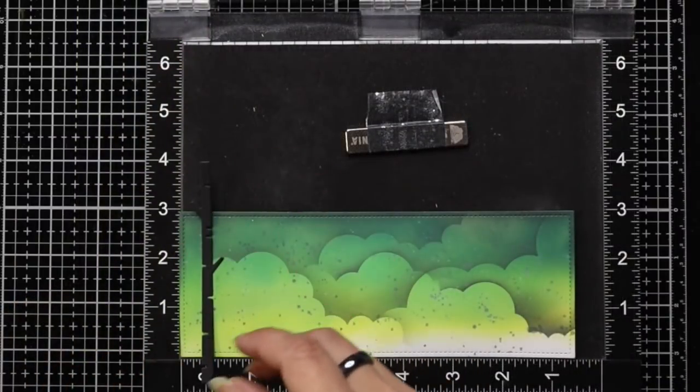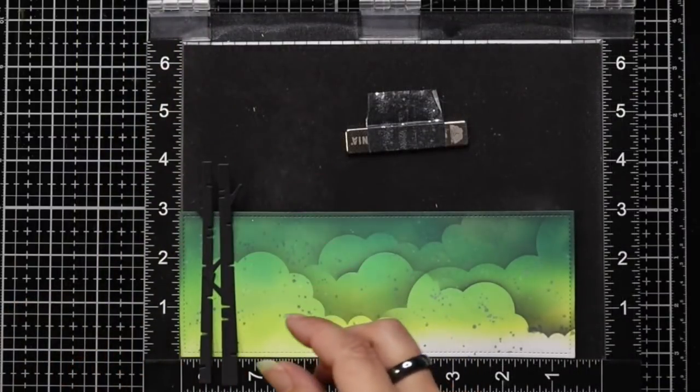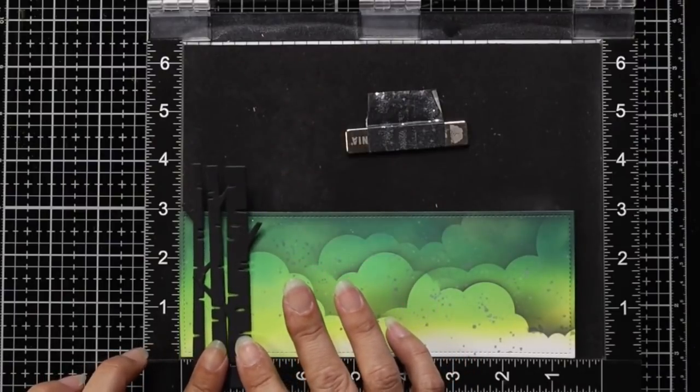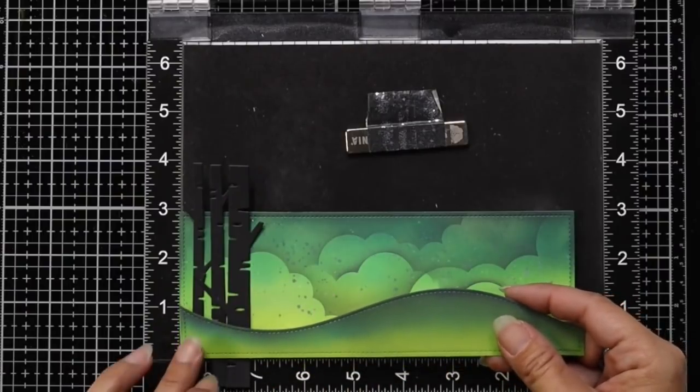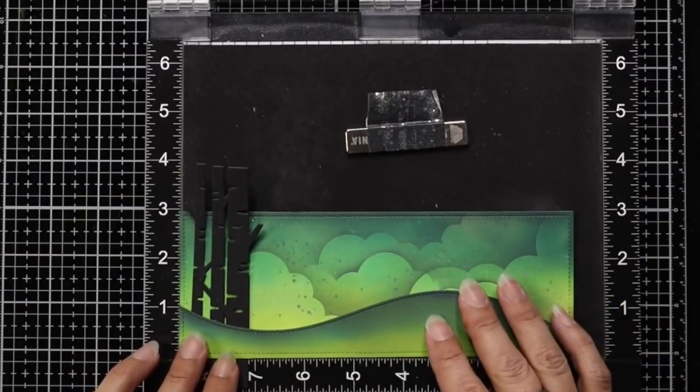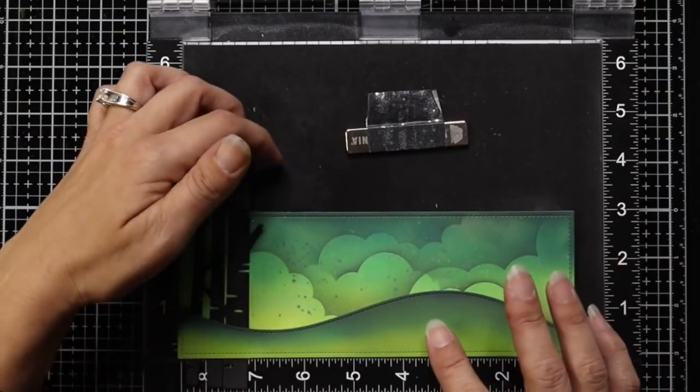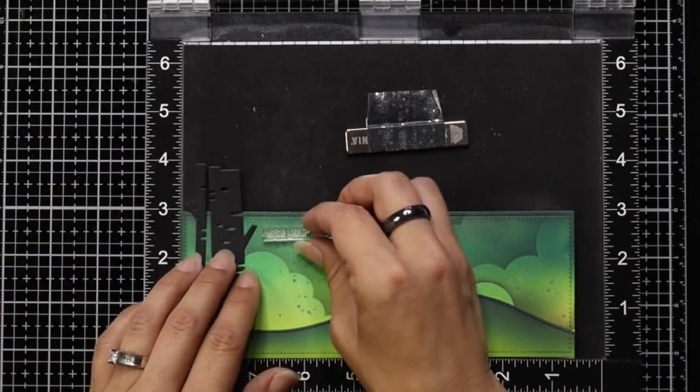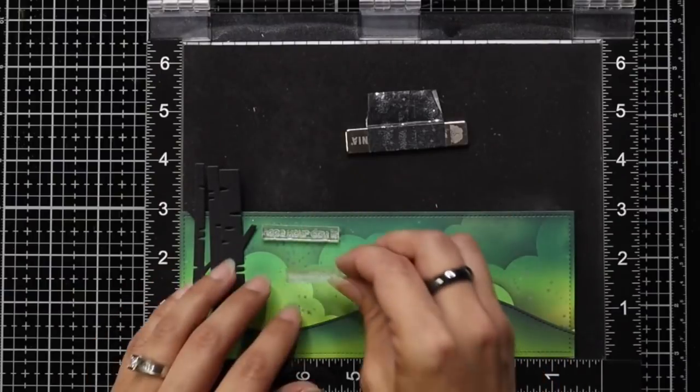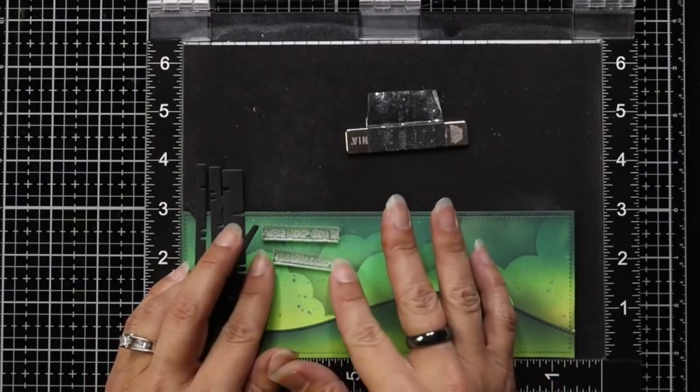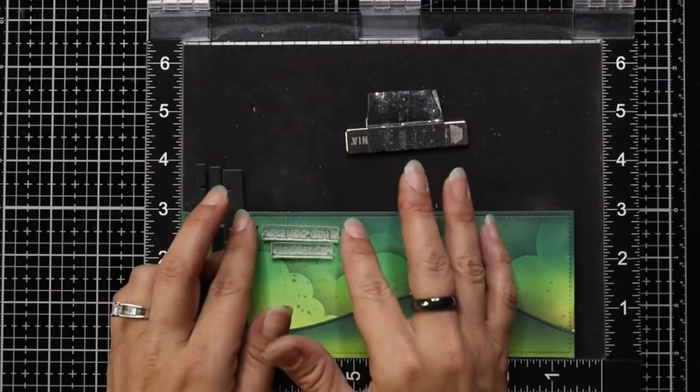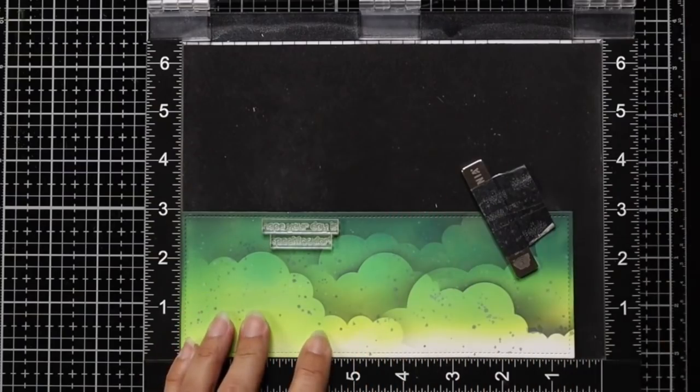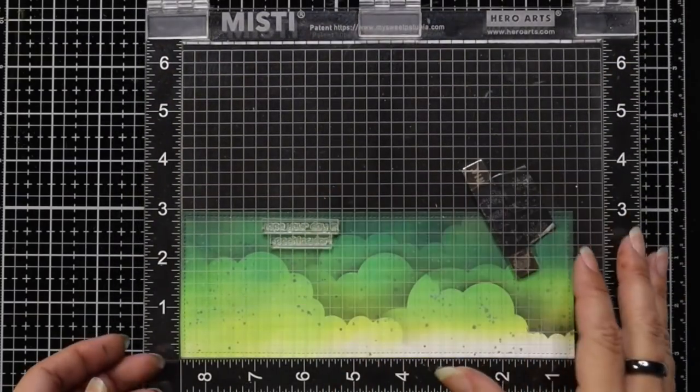So I'll use my Misti tool to do this, and I'm just lining up some of the elements off of my card, which is these birch trees and the stitched hillside, just to make sure I am leaving myself enough room and to find the exact placement of the sentiment. Then I'll bring in the sentiment from the Fox Costumes Before and After stamp set, so it's going to be two lines. And once I have that perfectly lined up, I'm kind of going off of that stitched line there.